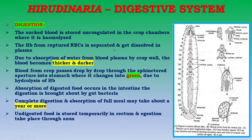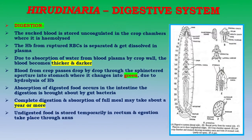The sucked blood is stored uncoagulated in the crop chambers where it is hemolyzed. Hemoglobin from ruptured RBCs is separated and dissolves in plasma. Due to absorption of water from blood plasma by the crop wall, the blood becomes thicker and darker. Blood from the crop passes drop by drop through the sphincter aperture into the stomach, where it turns green due to hydrolysis of hemoglobin. Absorption of digested blood occurs in the intestine. Digestion is brought about by gut bacteria, and complete digestion of a full meal may take about a year or more. Undigested food is stored temporarily in the rectum and expelled through the anus.